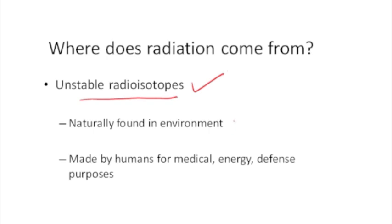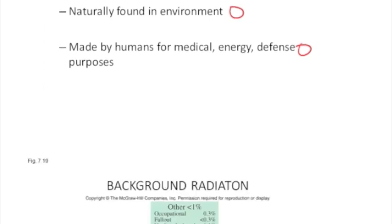So radioisotopes are naturally found in the environment, and they're also human-made for medical, energy, and defense purposes. So there's two sources, either just naturally or human-made.